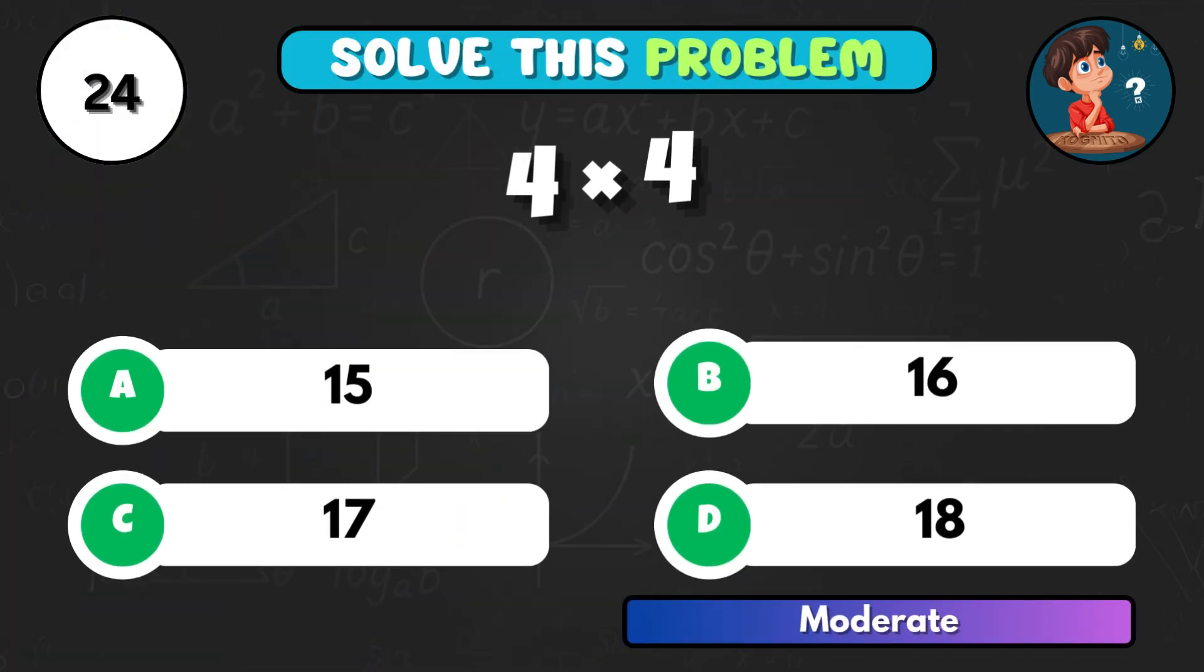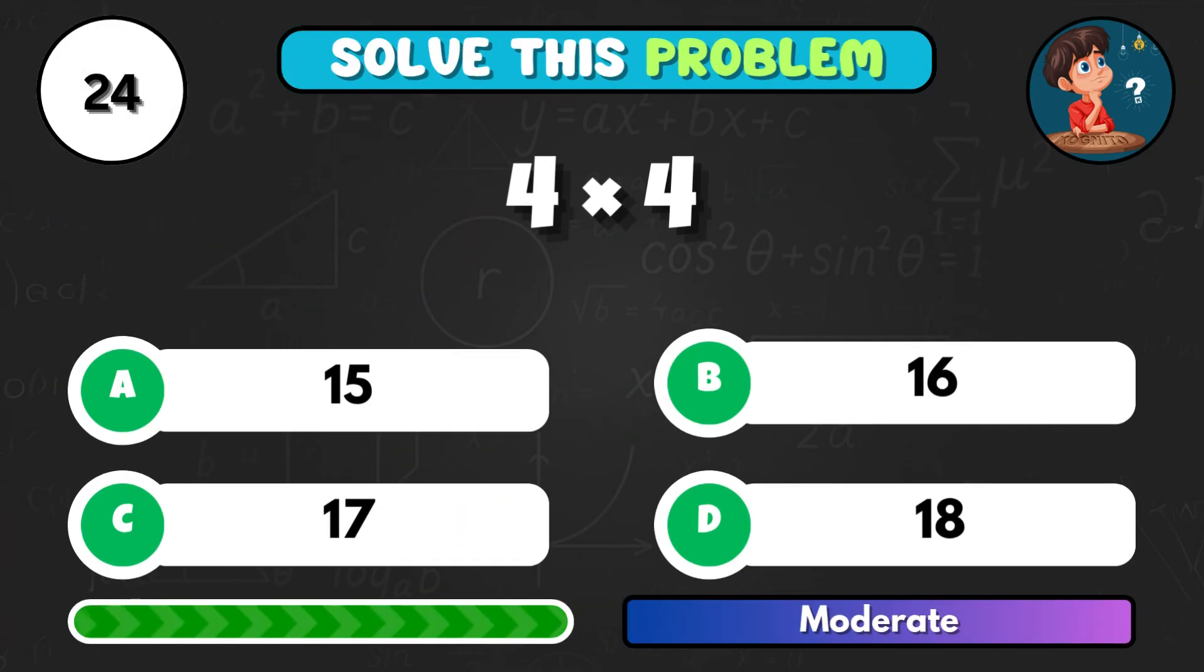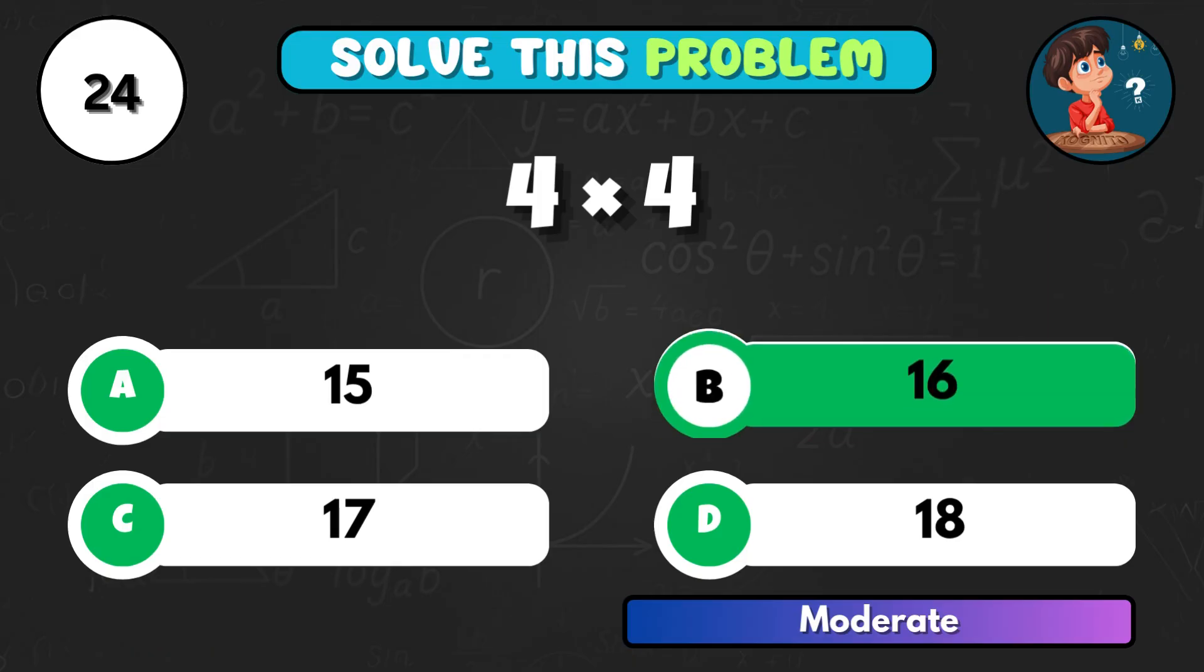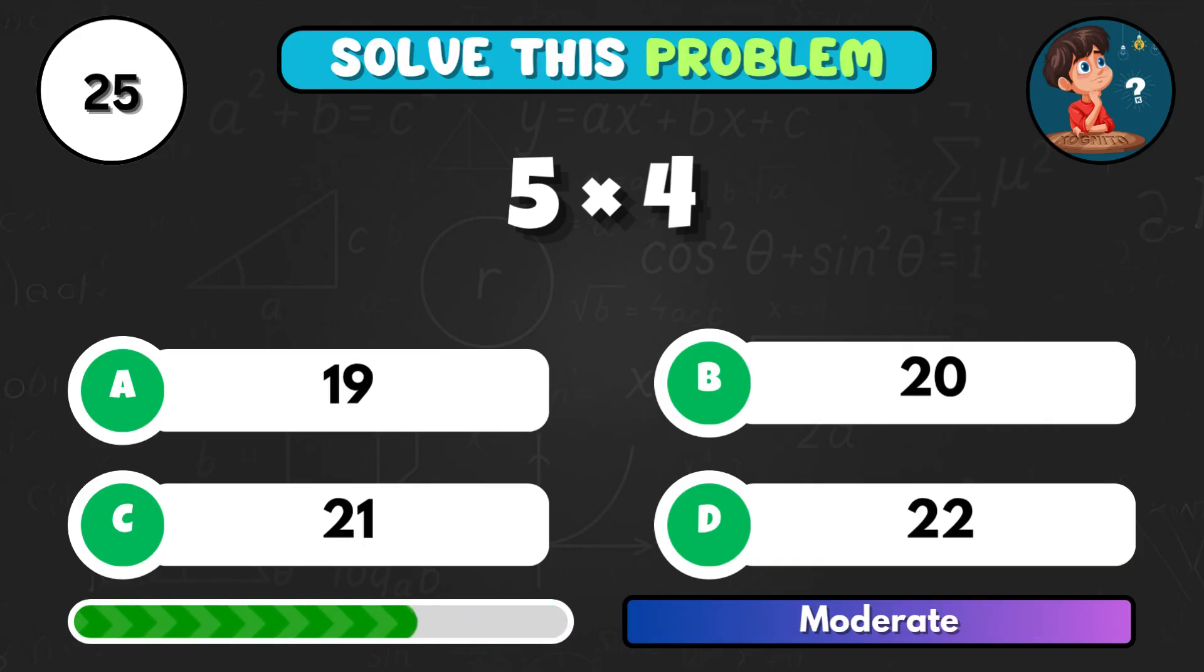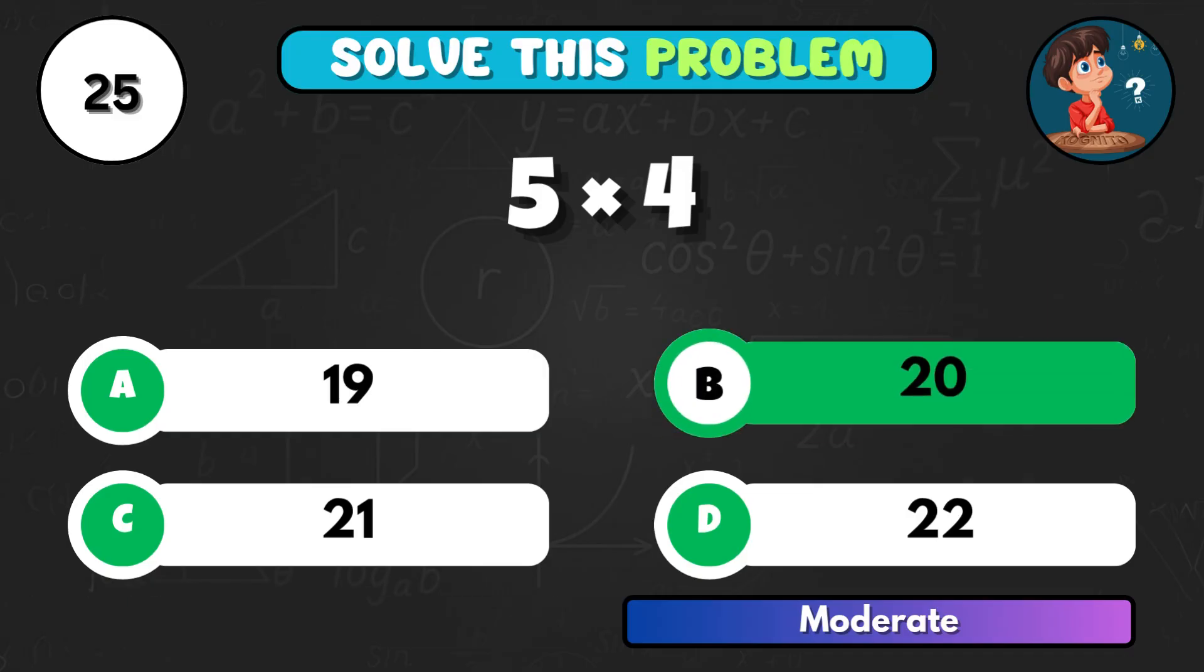4 squared now, 4 times 4. Correct choice B, 16. How about 5 times 4? Answer is B, 20.